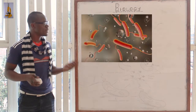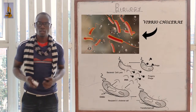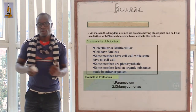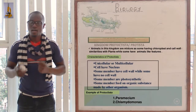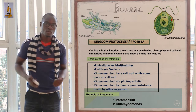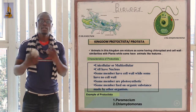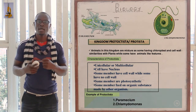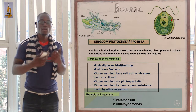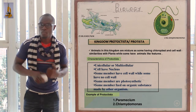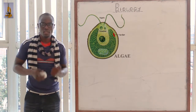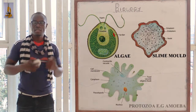An example is Vibrio cholerae, which leads to a disease called cholera. The next kingdom is kingdom Protoctista, or it can be called kingdom Protista. These are mainly unicellular organisms and they are eukaryotic cells. This kingdom can also be called kingdom Eukaryota. Examples of organisms under this kingdom include algae, slime mold, and protozoa.